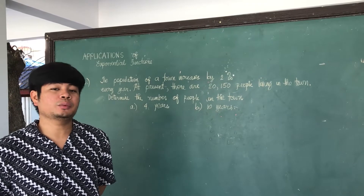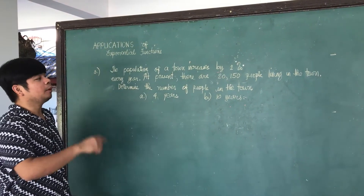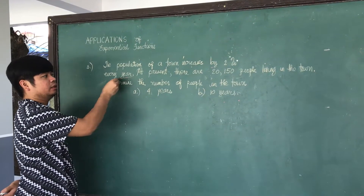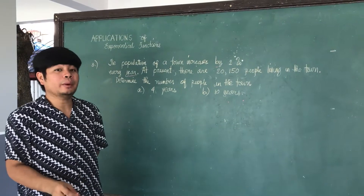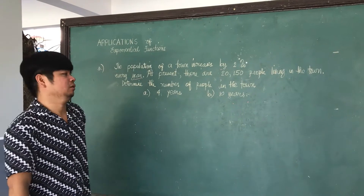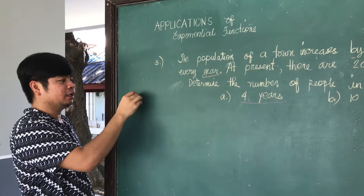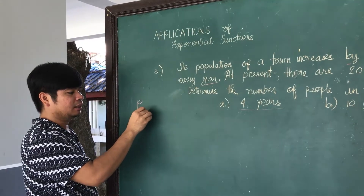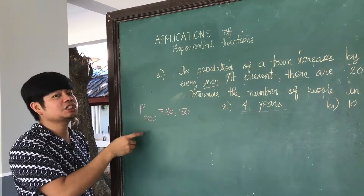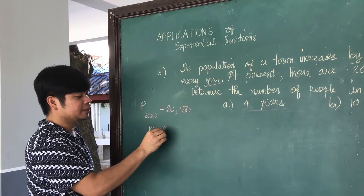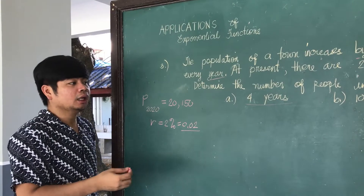Population growth is also an application of exponential functions. Consider that the population of a town increases by 2% every year — that 2% is the rate of increase. At present, say 2020, there are 20,150 people living in the town. We will determine the number of people after 4 years and after 10 years. The initial population for 2020 is 20,150, and the rate is 2%, which equals 0.02 in decimal.